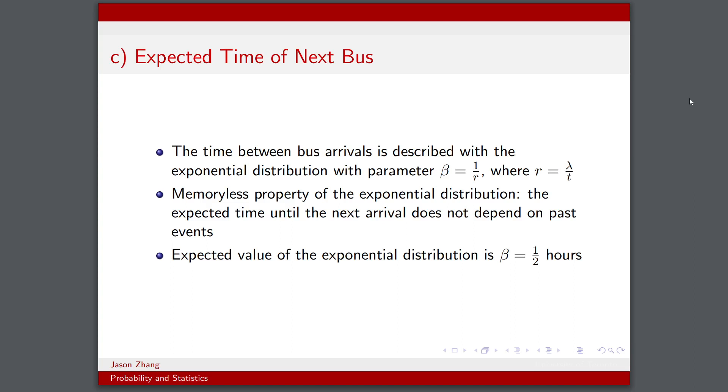And this makes sense because we're given λ = 2 buses per hour, which would average out to one bus every half hour. Again, r = 2 because λ = 2 and t would be given as an interval of 1 hour. And so we would get β = 1/2 hour.